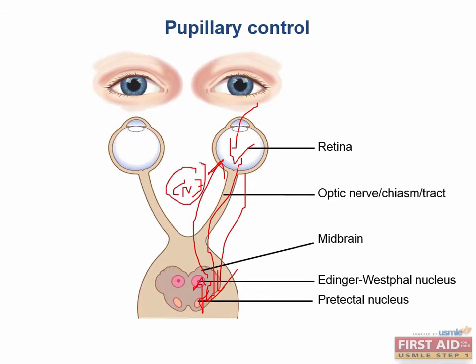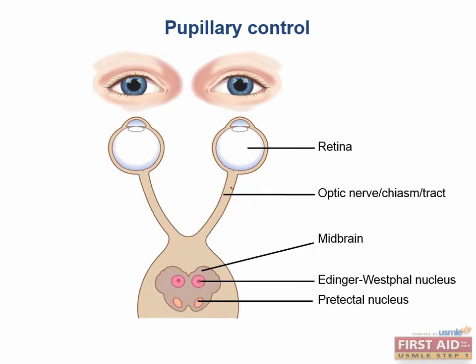A lesion of the optic nerve does not stop a bilateral reflex. The bilateral response is due to the fact that the pretectal nuclei innervate both Edinger-Westphal nuclei, each of which then sends ipsilateral constrictor responses. When it comes to pupillary reflexes, you get one eye in, two eyes out. The only time you will not get a bilateral reflex is if the parasympathetic portion of cranial nerve 3 is damaged.